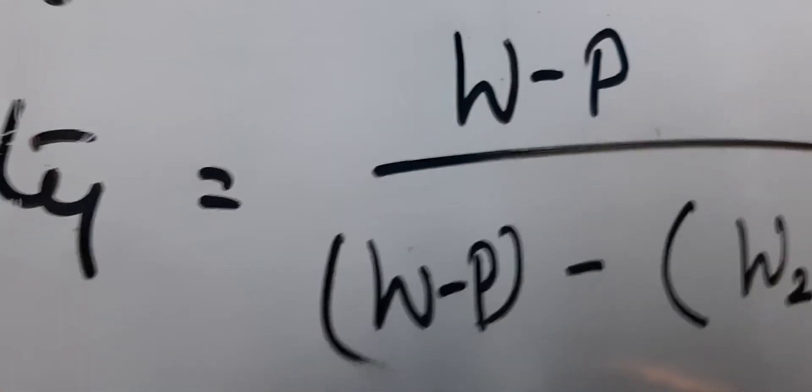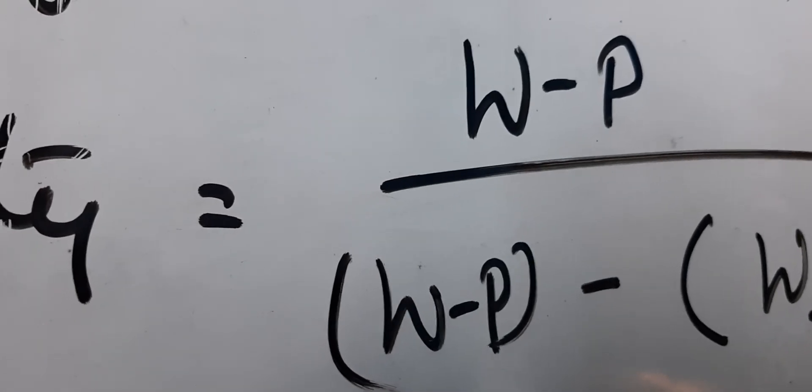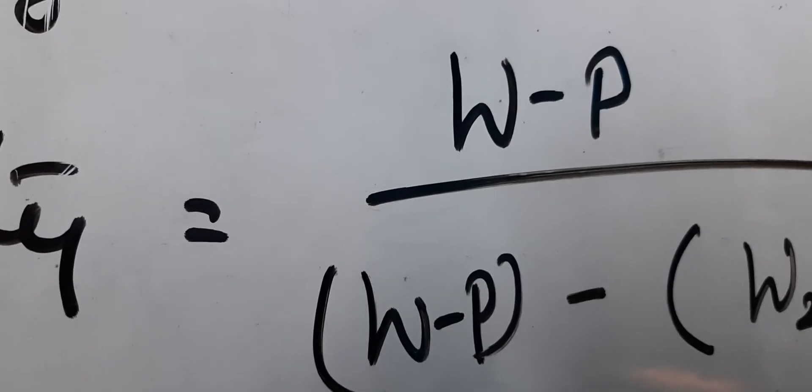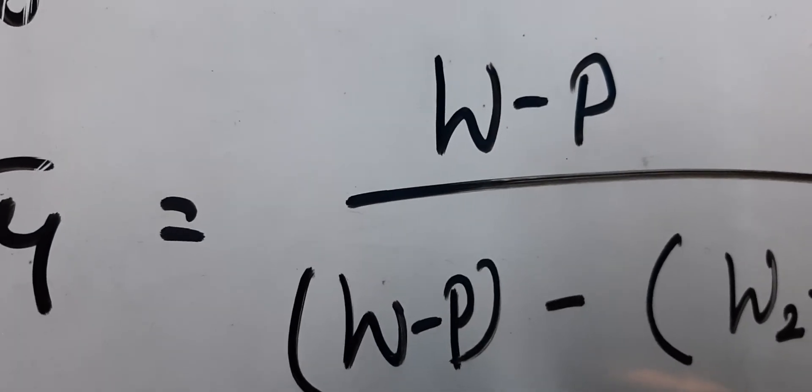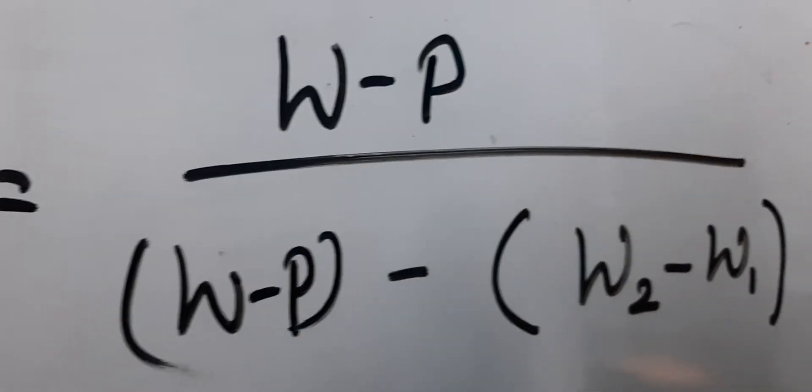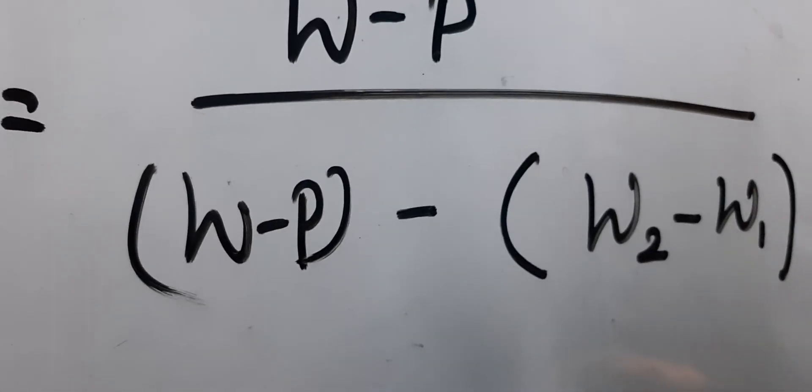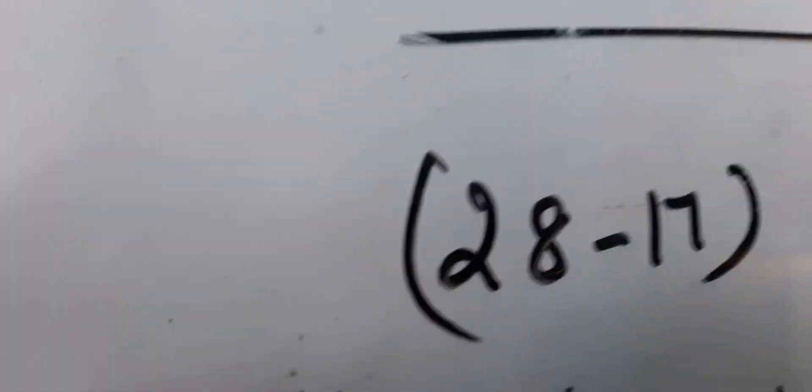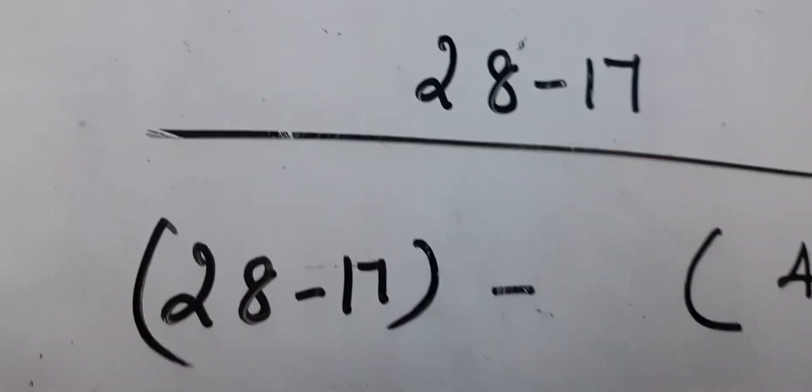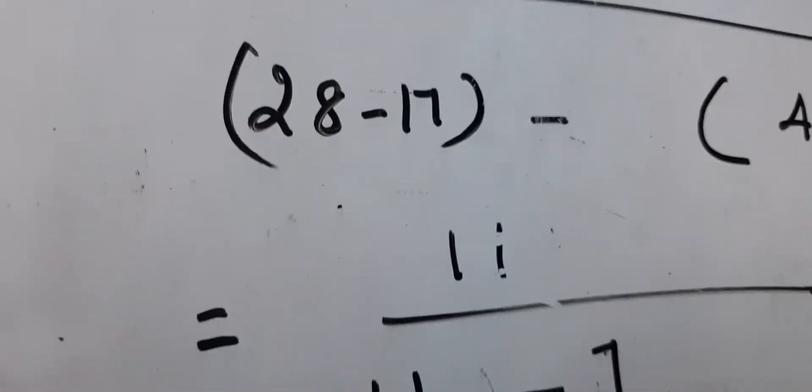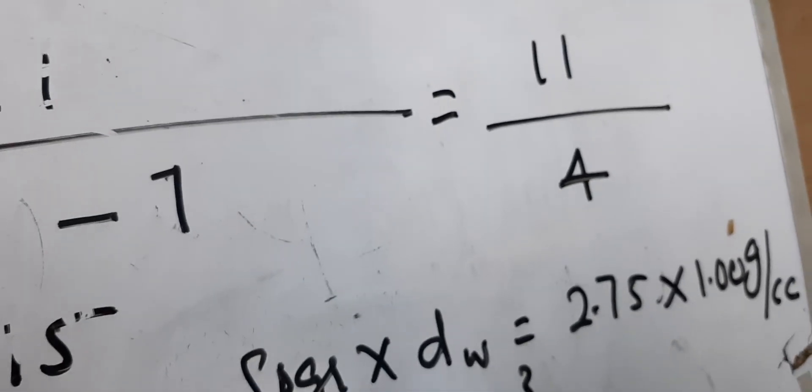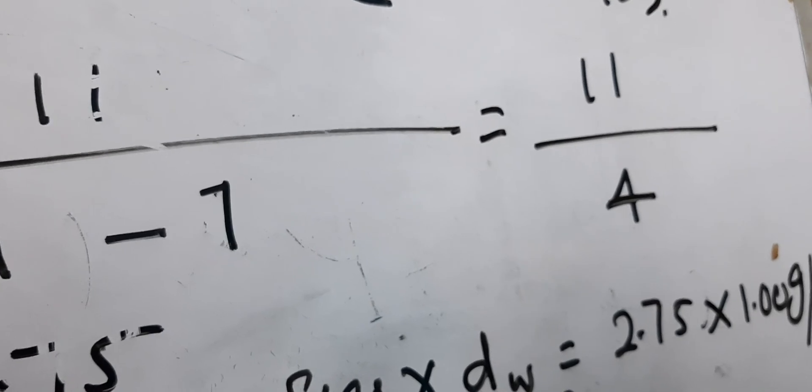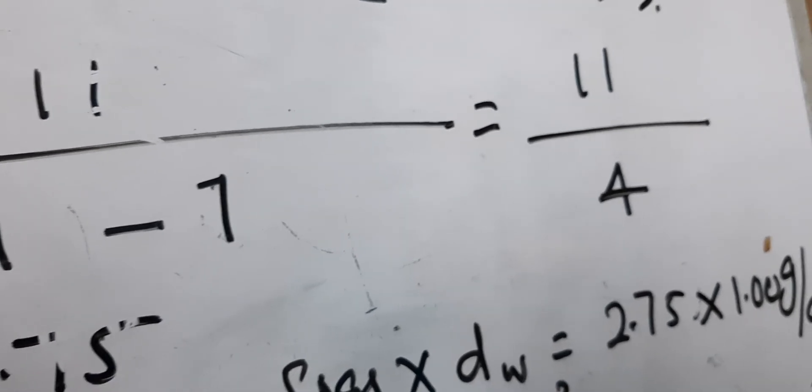That is W2, I got 47 grams. Next we calculate the specific gravity: W minus P. W is the weight of container plus sample, P is the weight of empty container, then you get the weight of the sample. Specific gravity can be calculated using this formula. There is no unit for specific gravity. The calculations are done and I got the specific gravity to be 2.75.